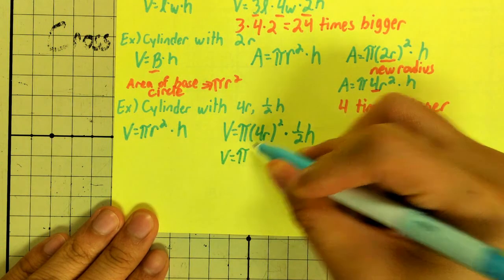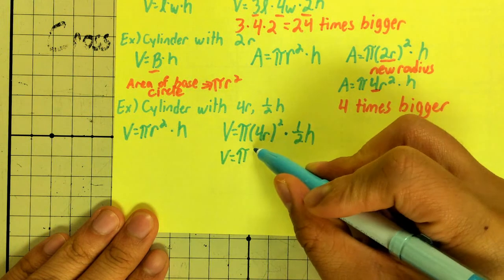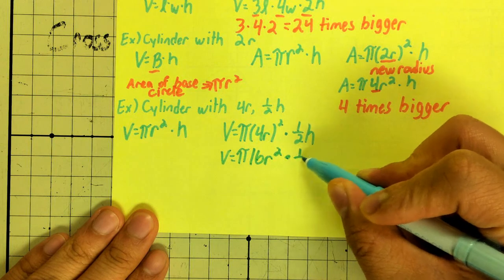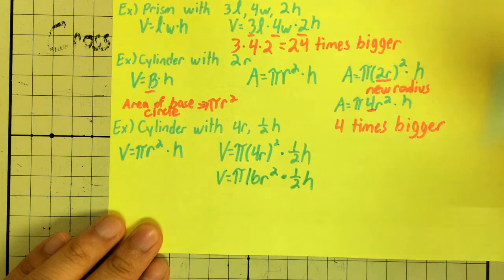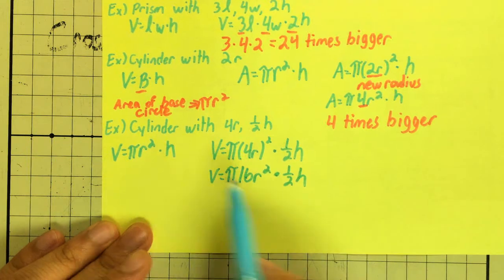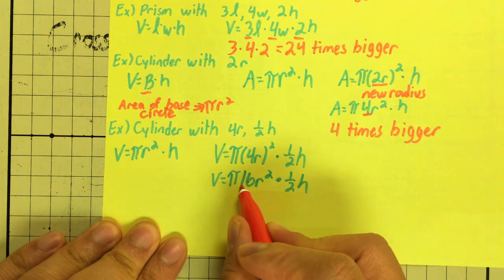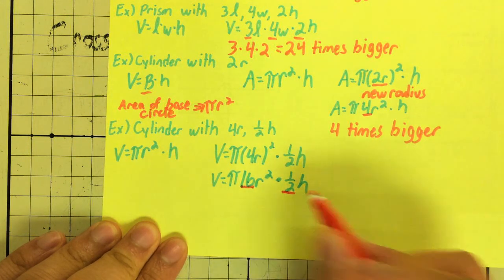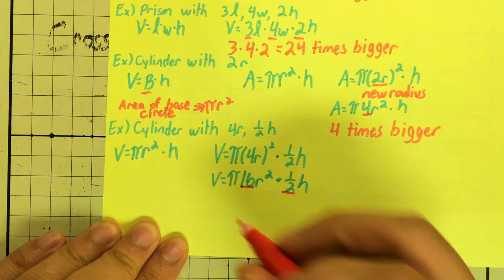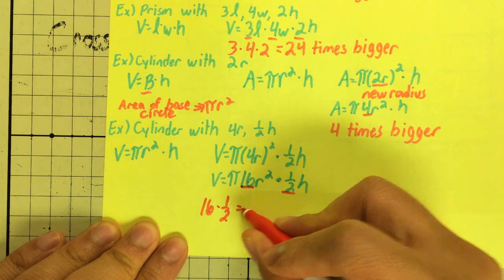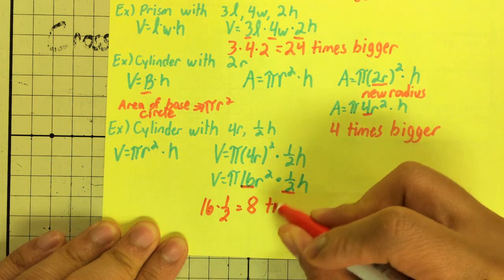Clean this equation up a bit. That's still pi. I can do 4 squared to get 16 r squared times 1 half h. Now, comparing my new formula right here and my old formula, I see that I now have a 16 there and a 1 half there. Those are different. So, I can do 16 times 1 half, multiply those out, equals 8 times bigger.